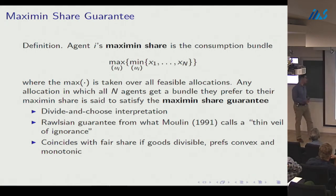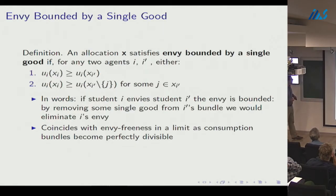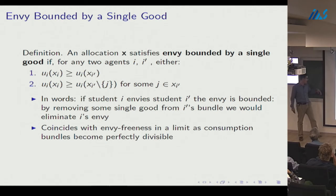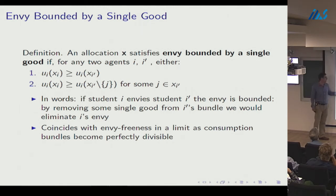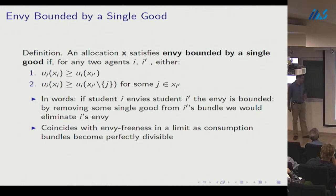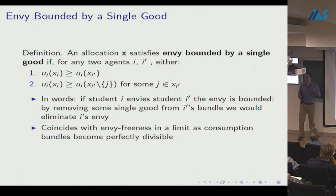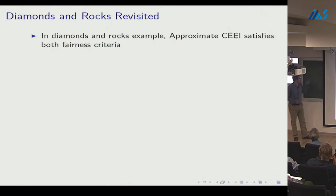The maximin share guarantee is a Rawlsian guarantee. It coincides with fair share if goods are divisible and preferences are convex and monotonic. I'll also say an allocation satisfies envy bounded by a single good if for any two agents i and i', either agent i likes their own bundle better than i's, or i envies i' but the envy could be eliminated by striking a single object from i's bundle. This coincides with envy-freeness in the limit as indivisibilities become arbitrarily unimportant.